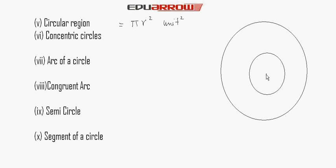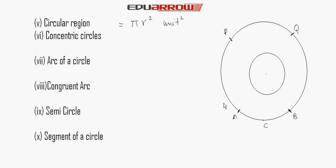Arc of a circle: The length from point A to point B along the circle is called the arc of a circle. Congruent arcs: Two arcs whose lengths are equal to each other are called congruent arcs. Arc PQ is equal to arc AB — this is called a congruent arc.